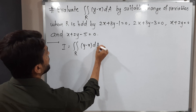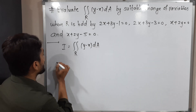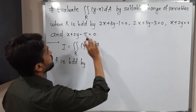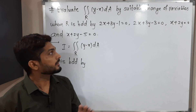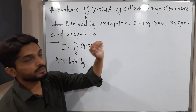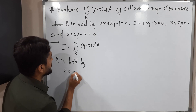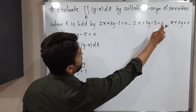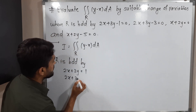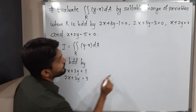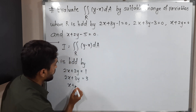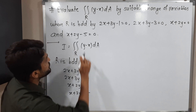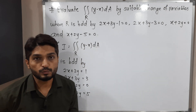R is bounded by four equations. Shifting the constants to one side: 2x plus 3y equals 1, and 2x plus 3y equals 3, then x plus 2y equals 0, and x plus 2y equals 5.